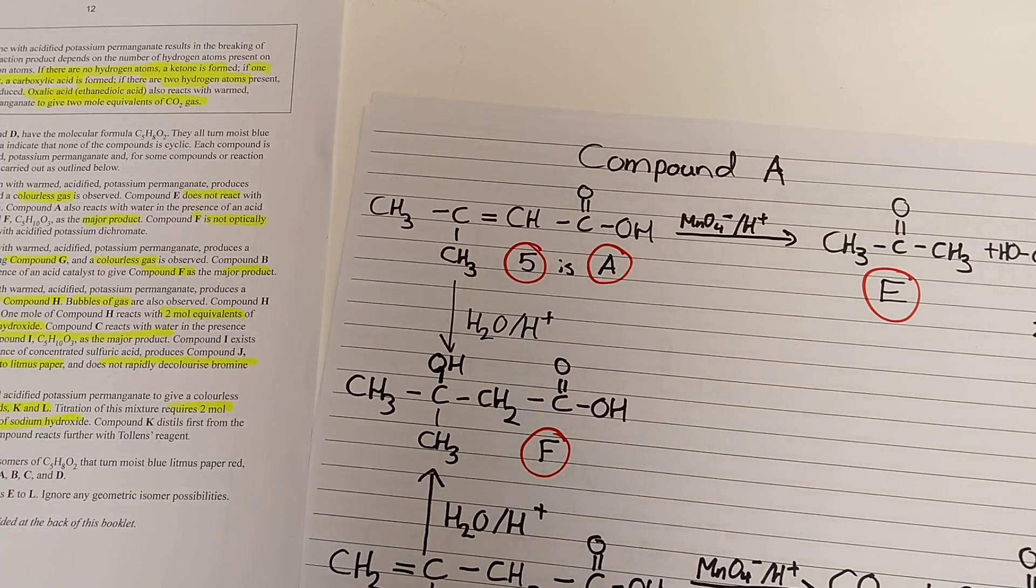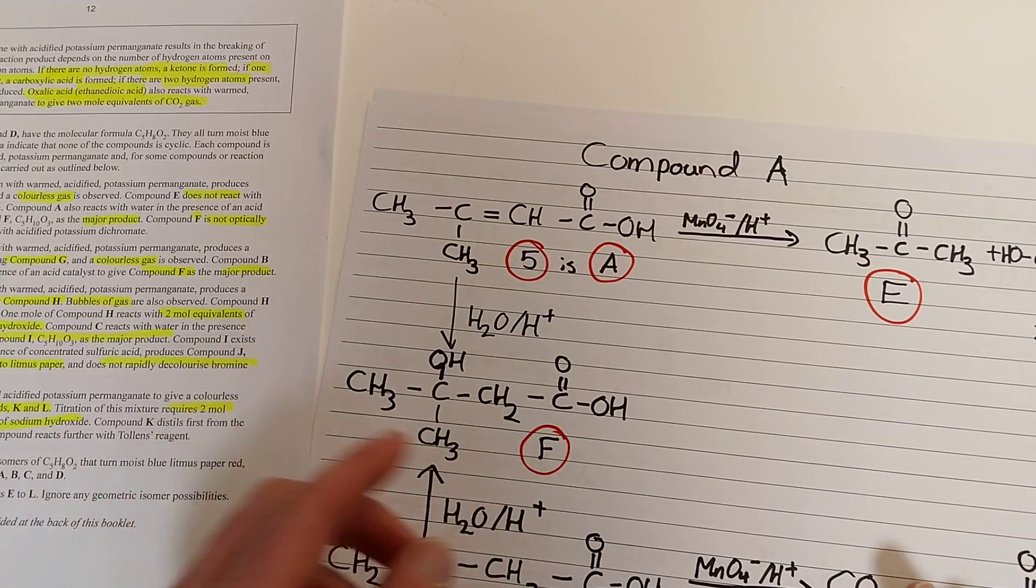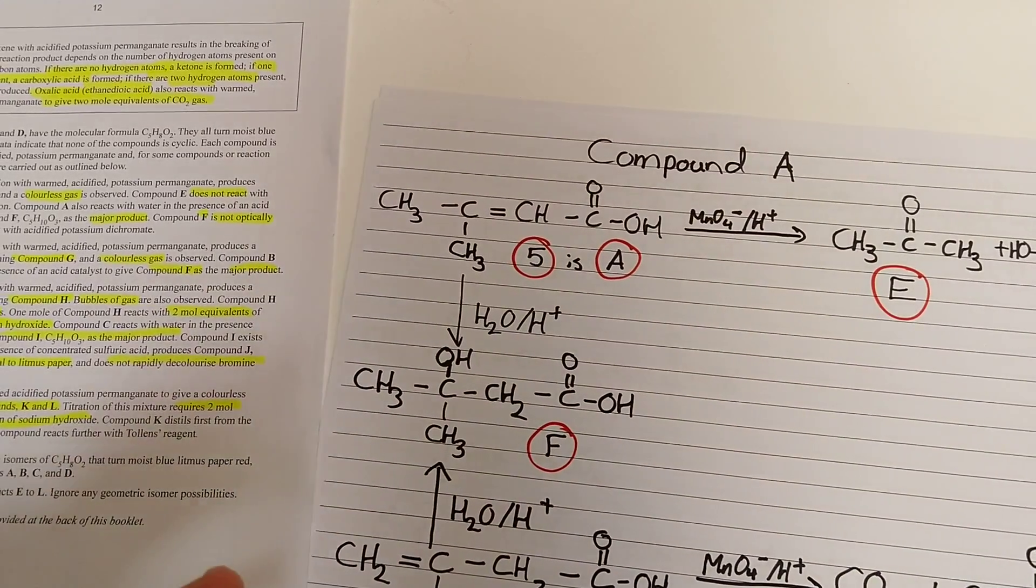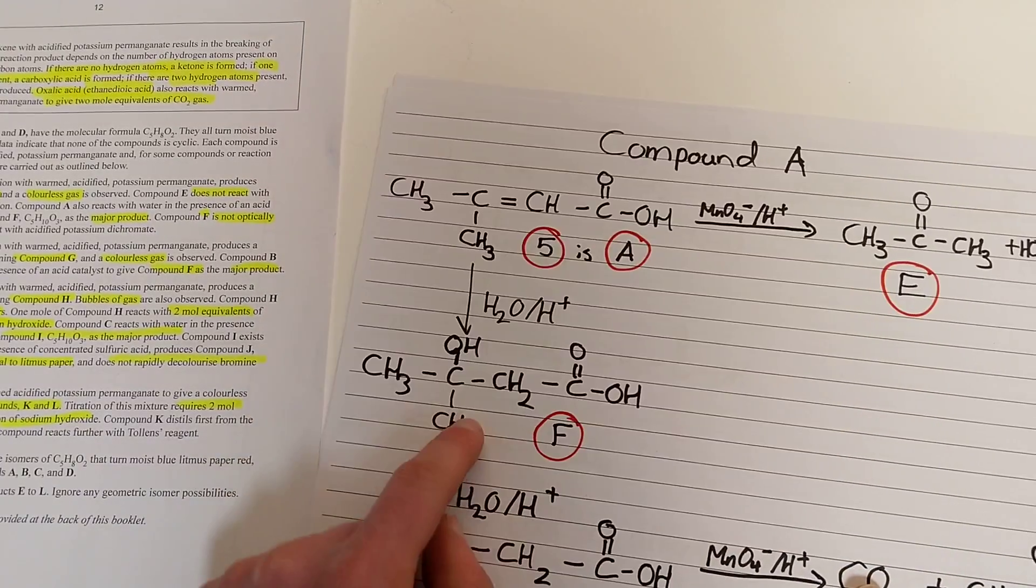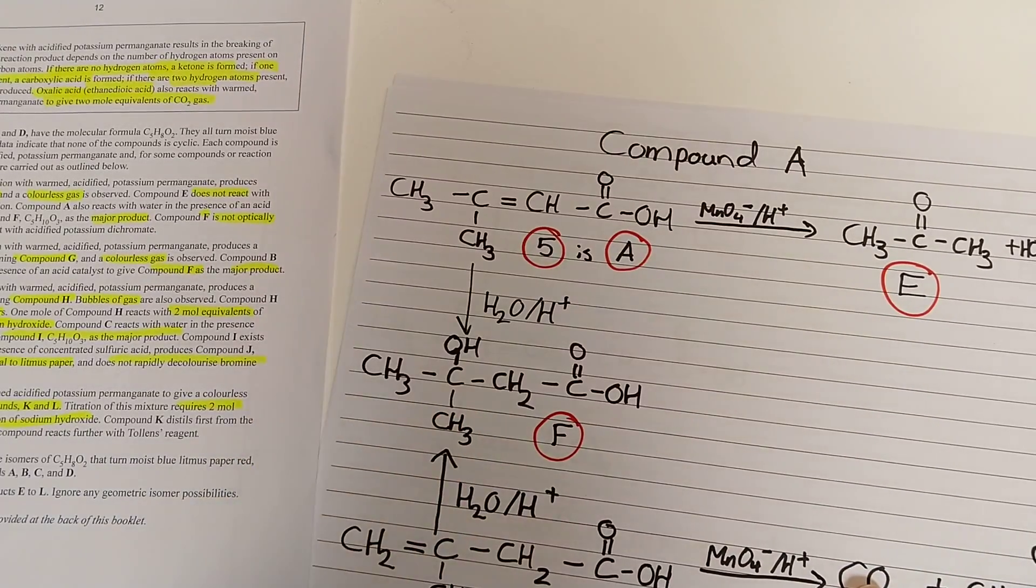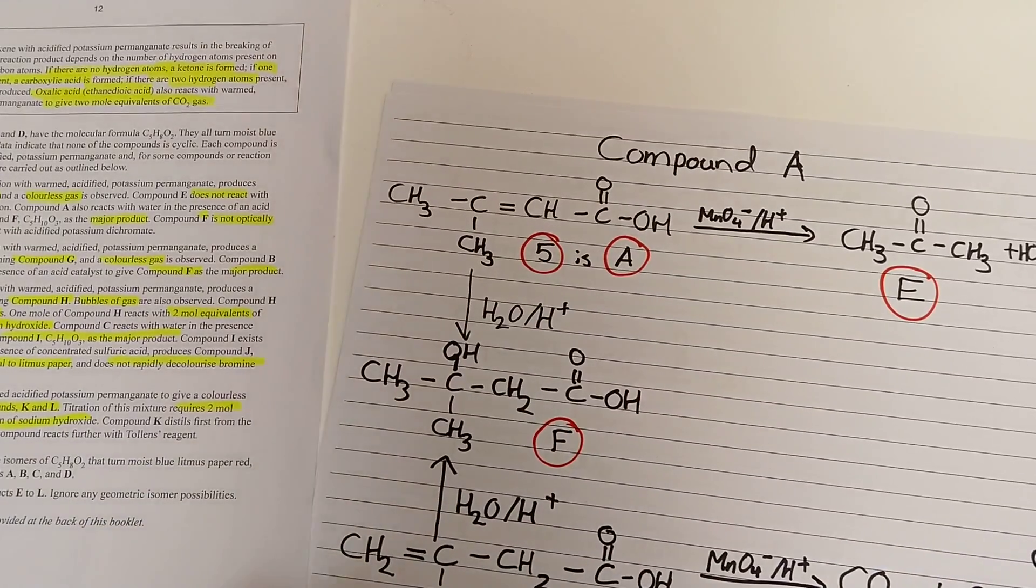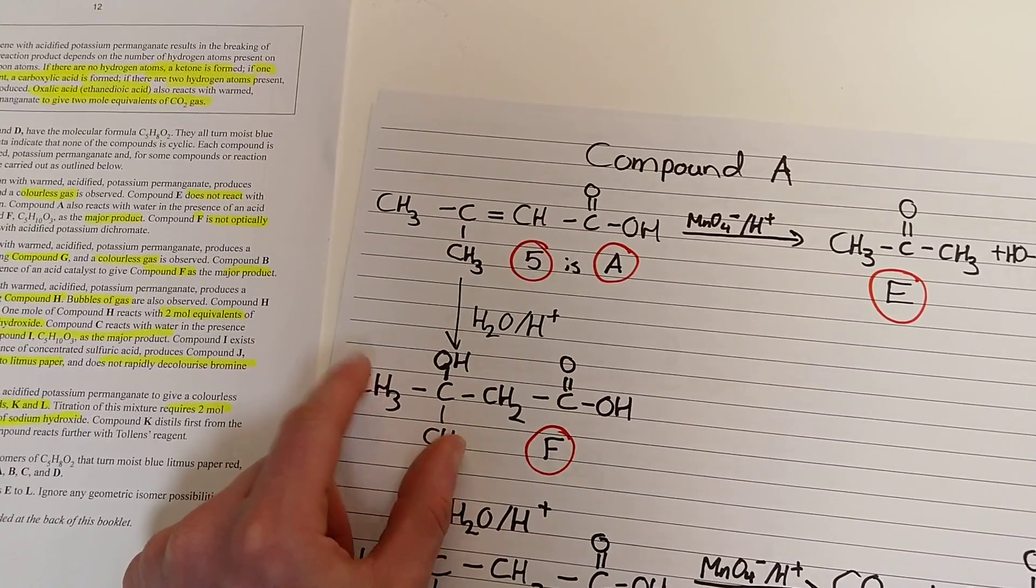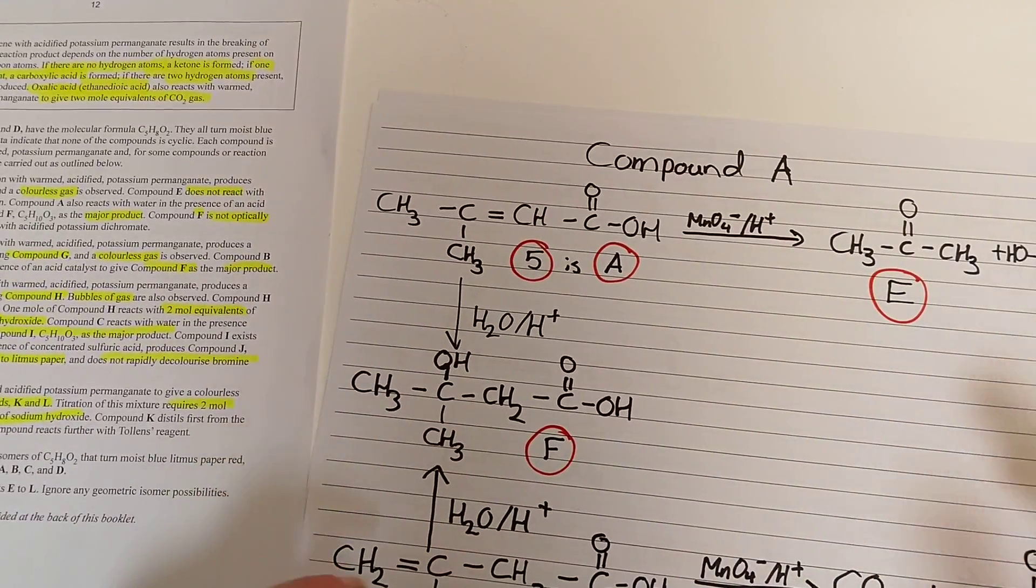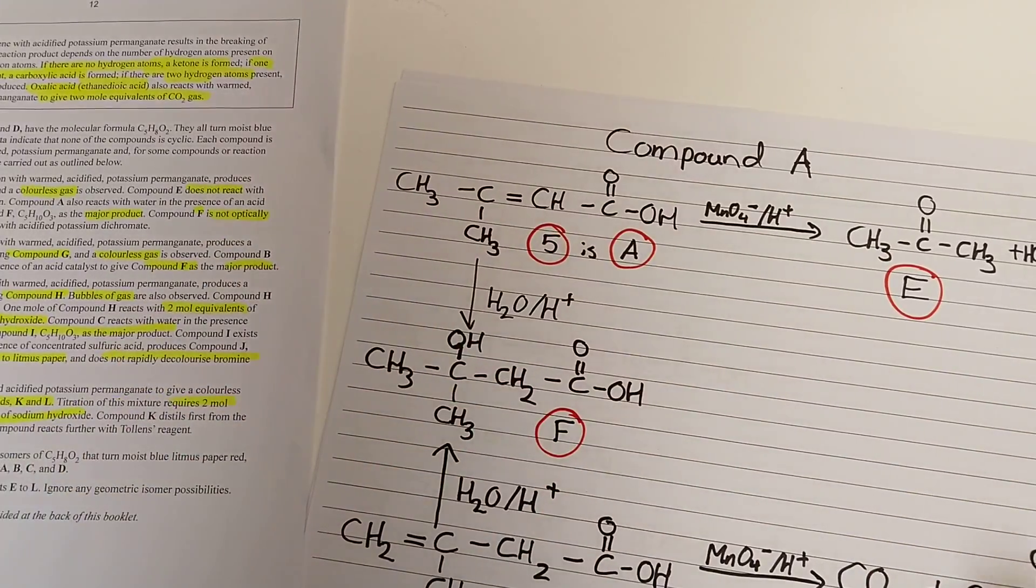We're also told that compound A reacts with water with an acid catalyst. So this is a hydration reaction, an addition reaction we learned way back in level 2. And when we form the major product, which I've drawn here, the major product is not optically active. We see it's not optically active because this carbon here has two identical groups. For it to be optically active, it needs a chiral carbon with four different groups. So this matches compound F as well.